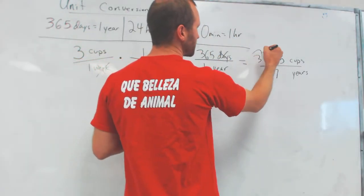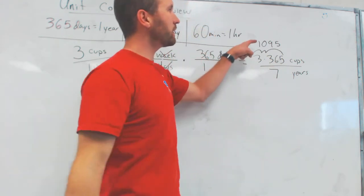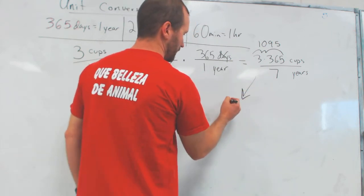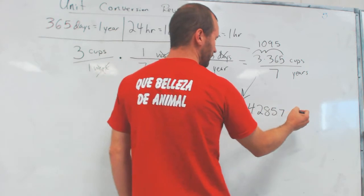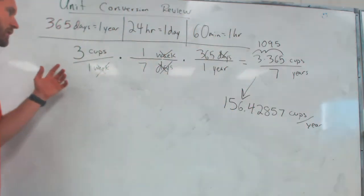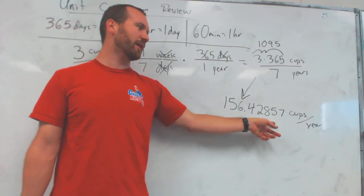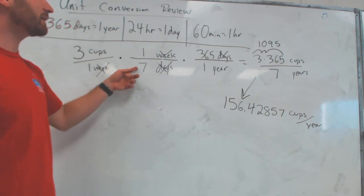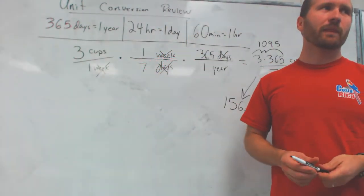What do I do? I look at the numbers up top: three times one times 365, that's cups of coffee over seven years. Three times 365 is 1,095. Now I do 1,095 divided by seven — that's 156.428571 cups of coffee per year. So for this imaginary person who drinks three cups of coffee per week, their year would be 156.428571 cups of coffee. It's because the numbers don't work out perfectly — we have to divide by seven because there are seven days in a week.